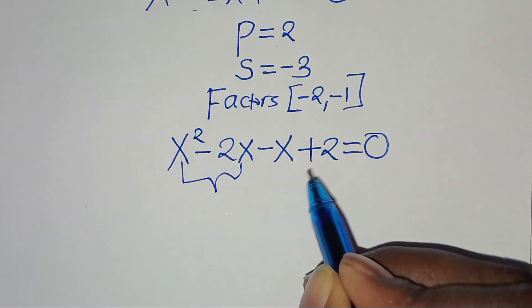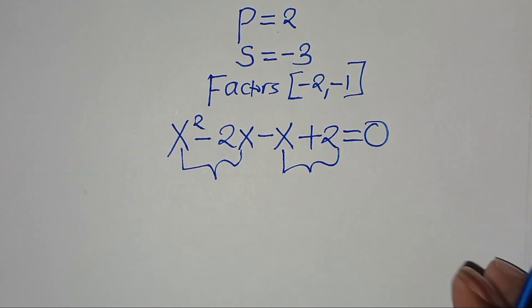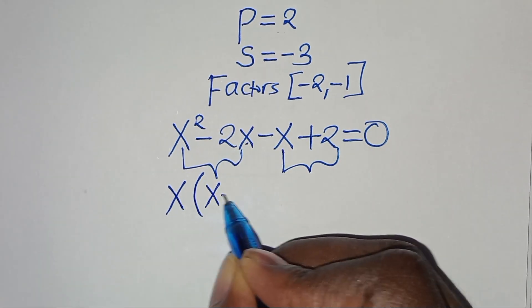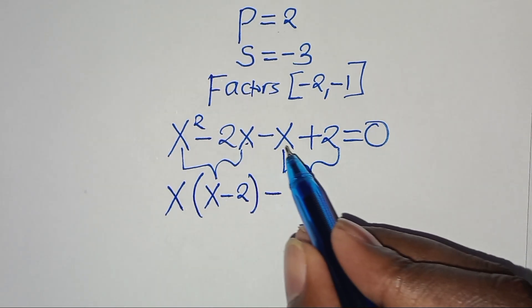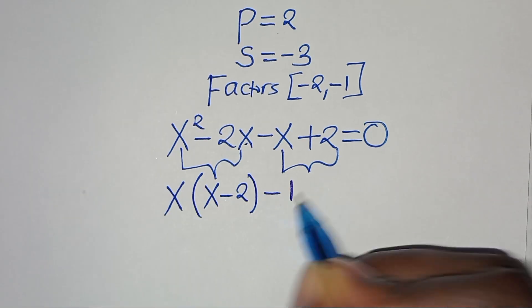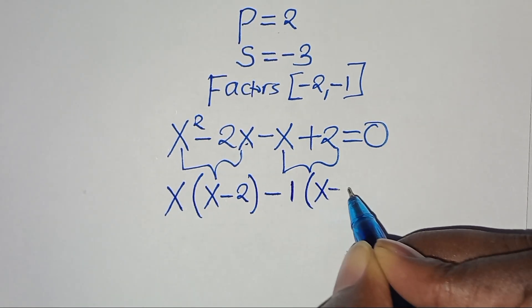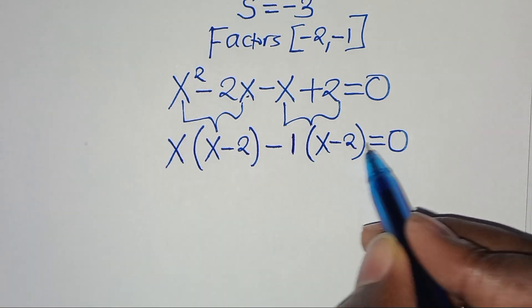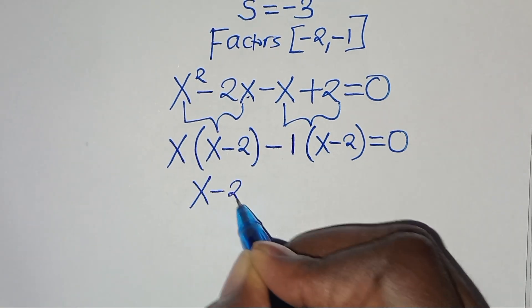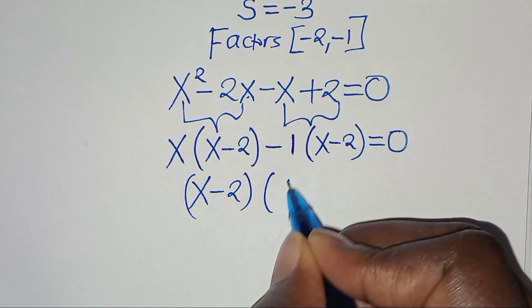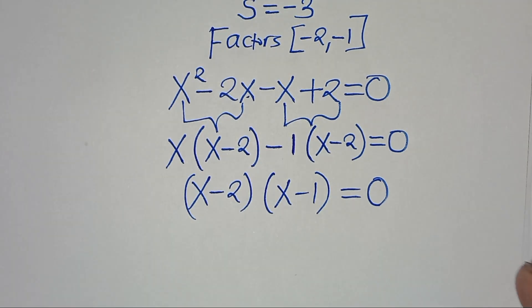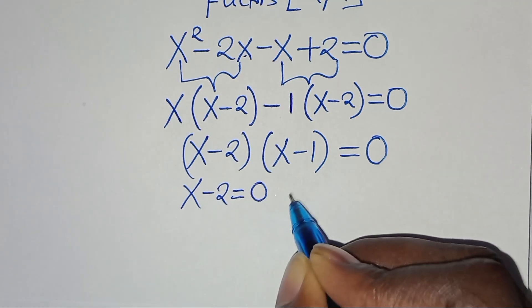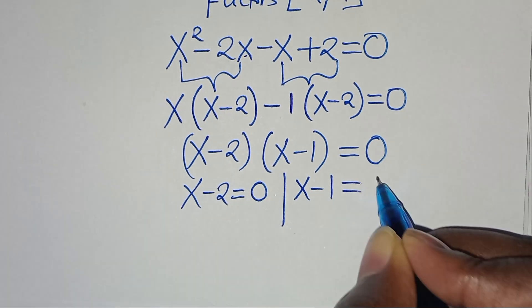So we have got 2 parts here. From the first part, x is common, so we can factor out x into the parenthesis — this is x minus 2. Then in the second part, 1 is common, so we can factor out 1, so that we have x minus 2, this is equal to 0. Now, x minus 2 is common, so this means we have x minus 2, then we have x minus 1, this is equal to 0. So this implies we have x minus 2 equal to 0, and we have x minus 1 equal to 0.